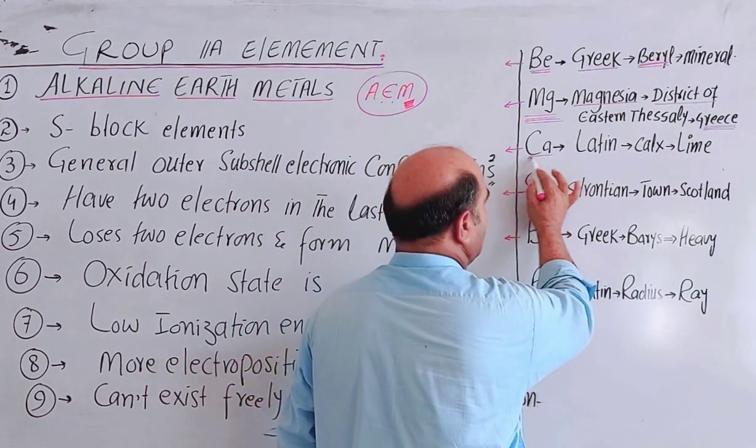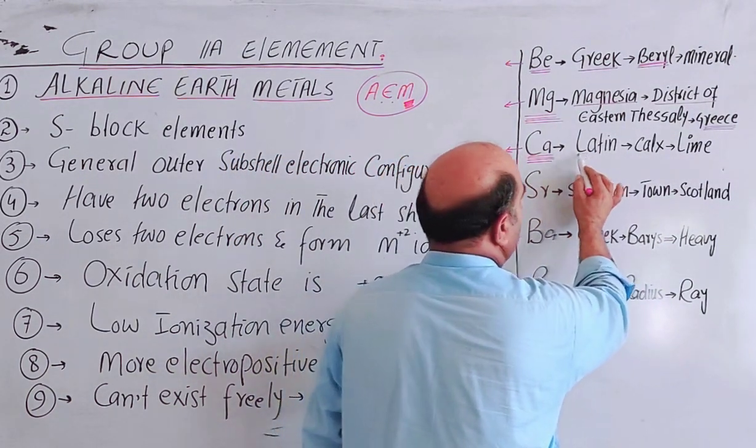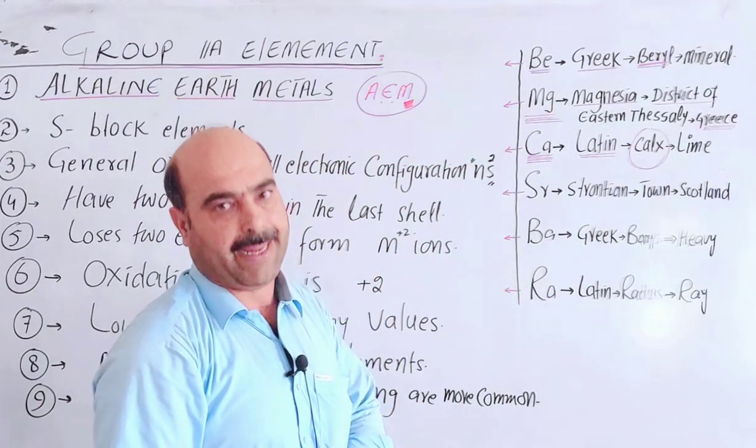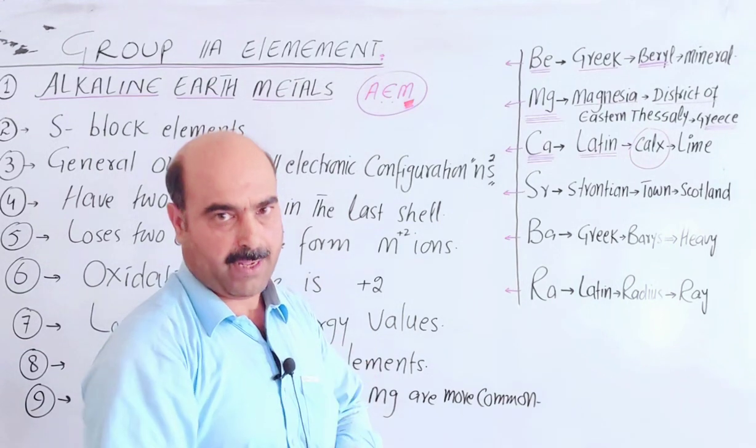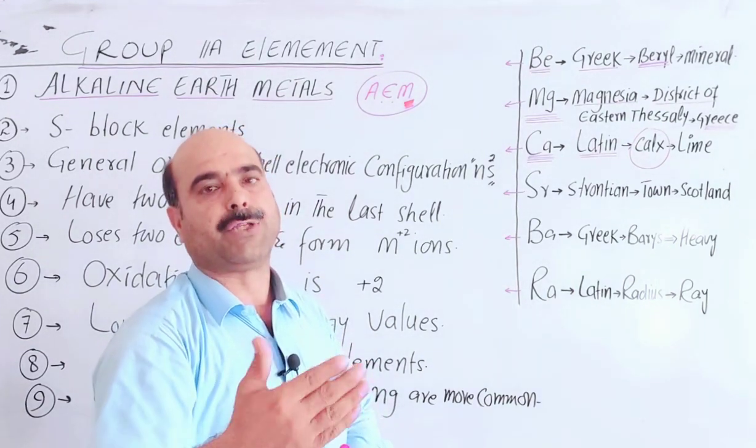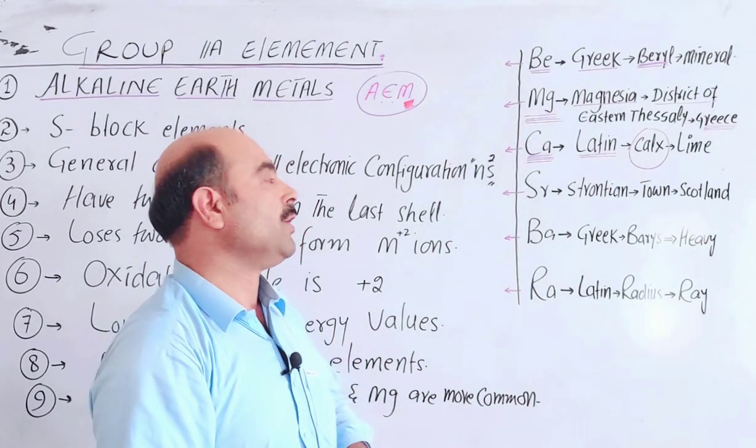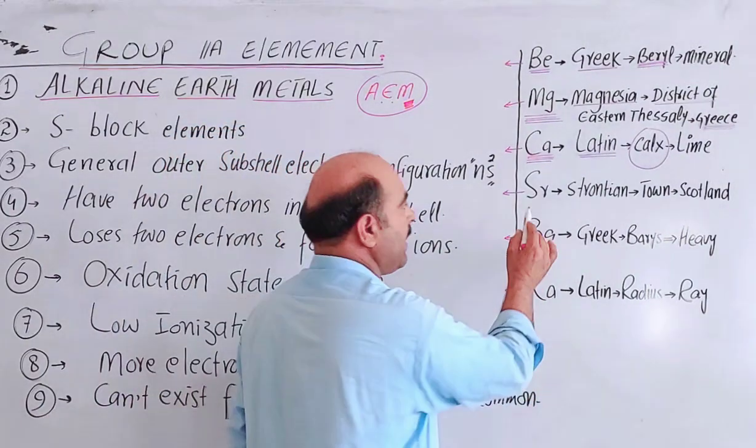The next one is calcium, symbol Ca. Calcium is derived from the Latin word calx, which means lime. Calx refers to calcium oxide, calcium hydroxide, or calcium sulfate.